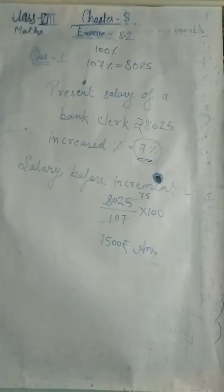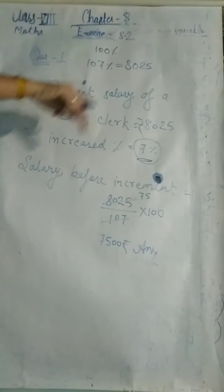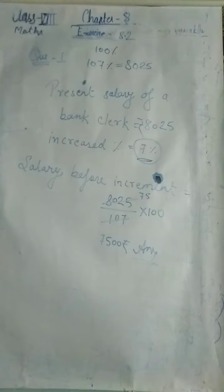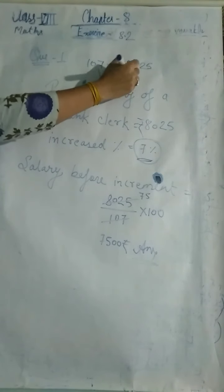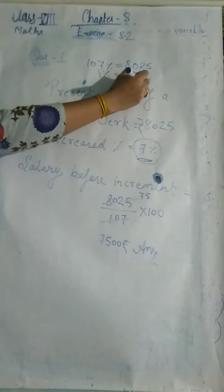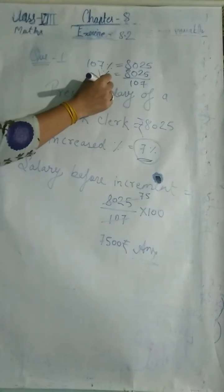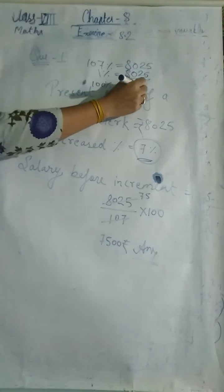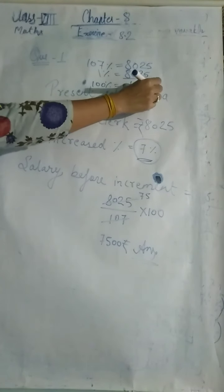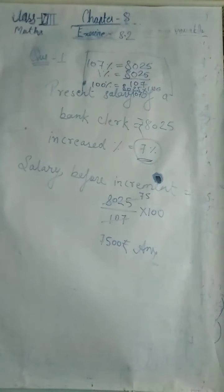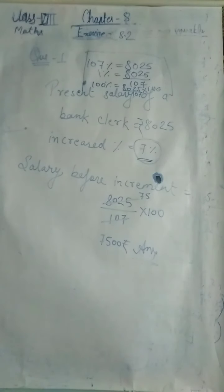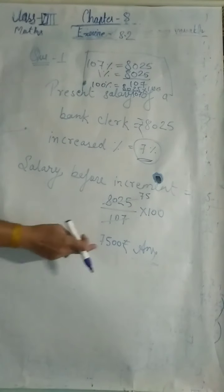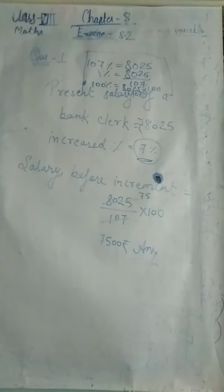Find what the previous salary was. Given that after 7% increment, the salary is Rs. 8025. To find the original salary: first find 1% value = 8025 ÷ 107, then find 100% value = (8025 ÷ 107) × 100.